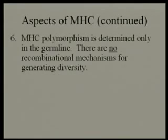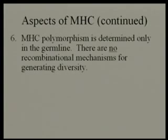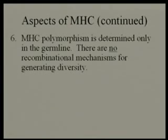The MHC polymorphisms are determined in the germline — there's no recombination mechanism. This is important because when T cells develop in the thymus, cells that can recognize the MHC molecules are allowed to continue, and then the ones that recognize self peptides are deleted. If there are changes in your MHC molecules, it will disrupt the ability of T cells to recognize peptides, since T cells are programmed to recognize only the proper MHC molecules.